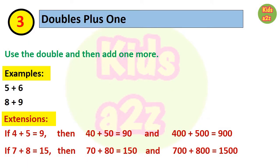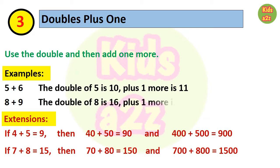Next is doubles plus 1. Here, we need to first use doubles and then add 1 more. Like, to add 5 plus 6, the double of 5 is 10, plus 1 more is 11, and that is the answer. For 8 plus 9, the double of 8 is 16, plus 1 is 17. We can also apply this strategy for bigger numbers.